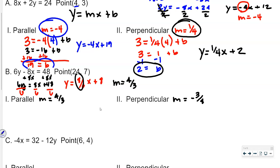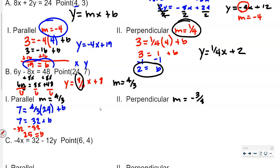For this problem, x is 24 and y is 7. Using y equals mx plus b with the parallel slope: 7 equals 4 thirds times 24, plus b. Four thirds of 24 is 32, so 7 equals 32 plus b. Subtracting 32 from both sides gives b equals negative 25. So the parallel line equation is y equals 4 thirds x minus 25.